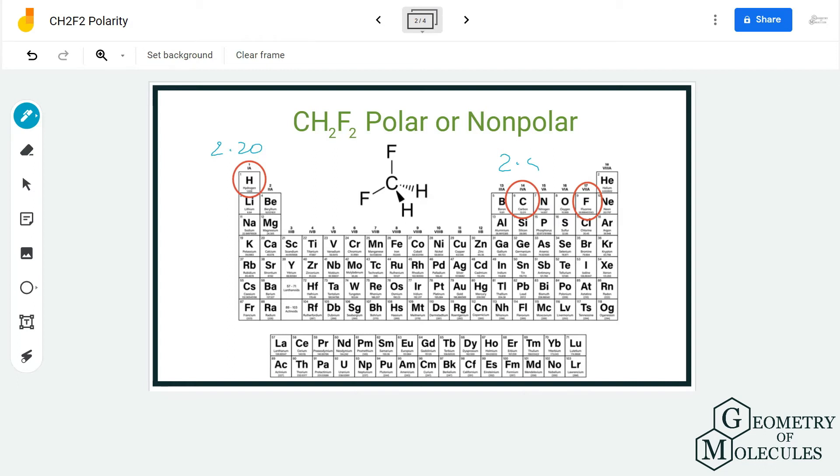Fluorine has an electronegativity value of 3.96. As there is a lot of difference in electronegativities between fluorine and hydrogen atom, and fluorine and carbon atom, there will be a dipole moment.